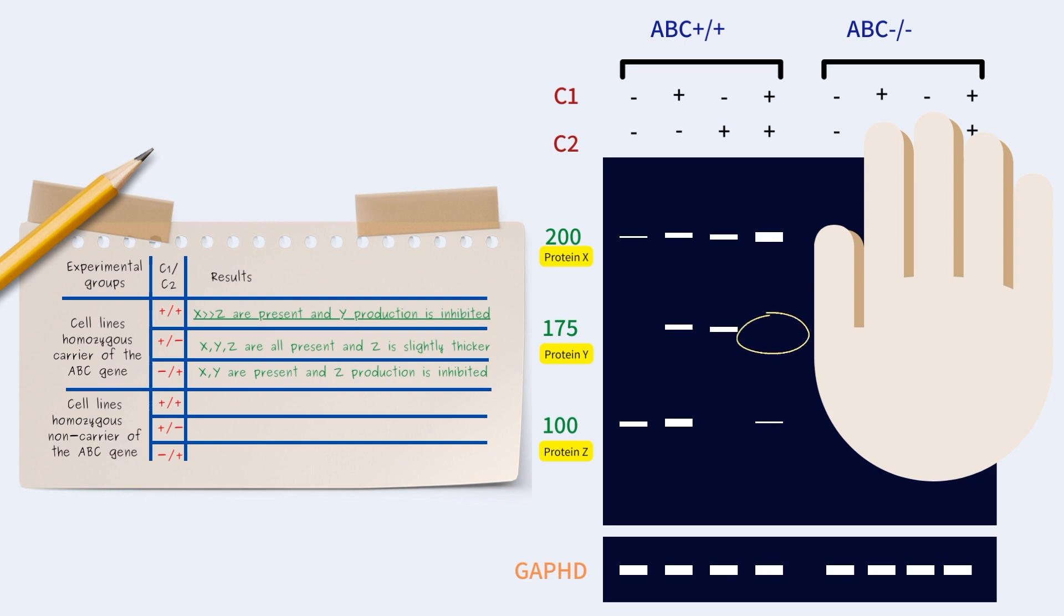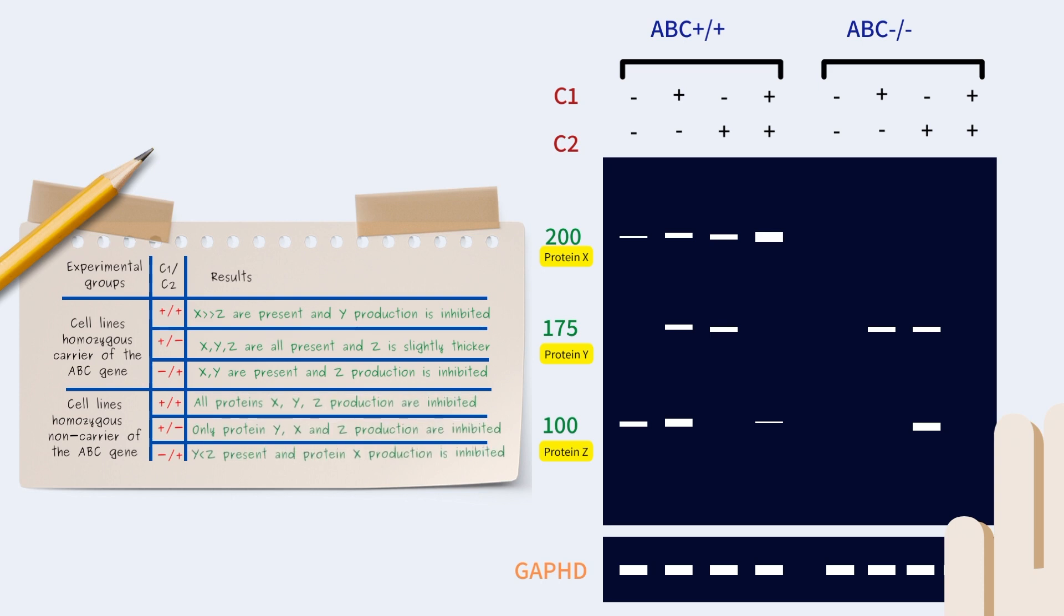Now let's do one more lane together. ABC carrying cell with both chemicals added has high levels of protein X, low levels of protein Z, and no protein Y produced. We'll continue to do this with the rest of the chart and fill up the results table.